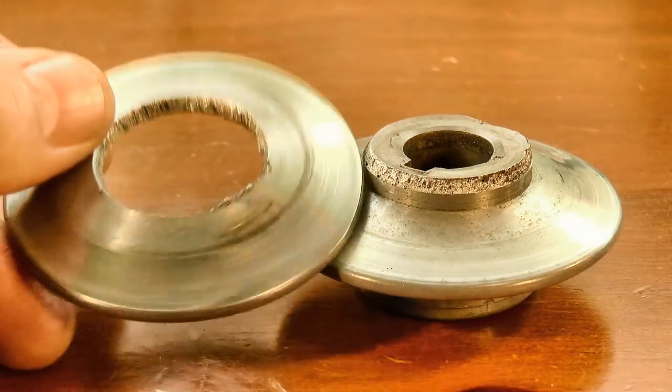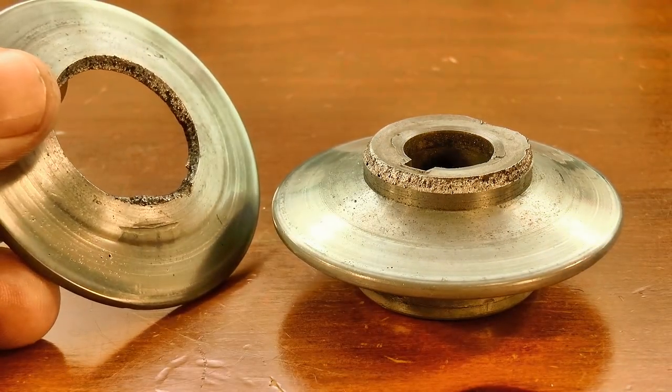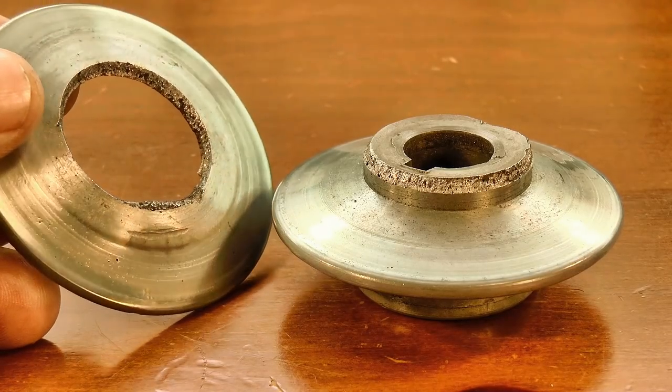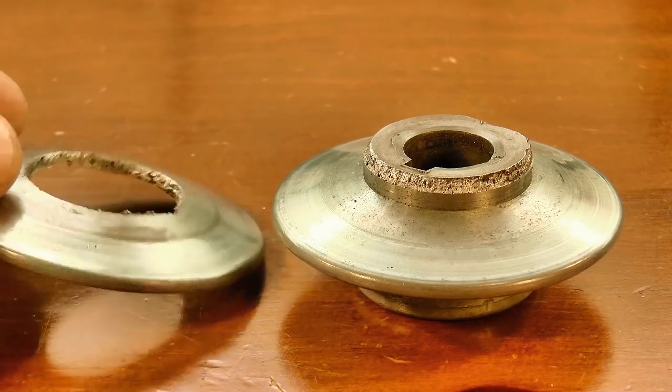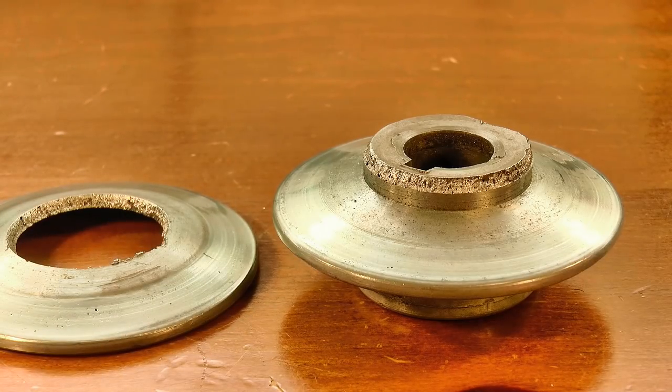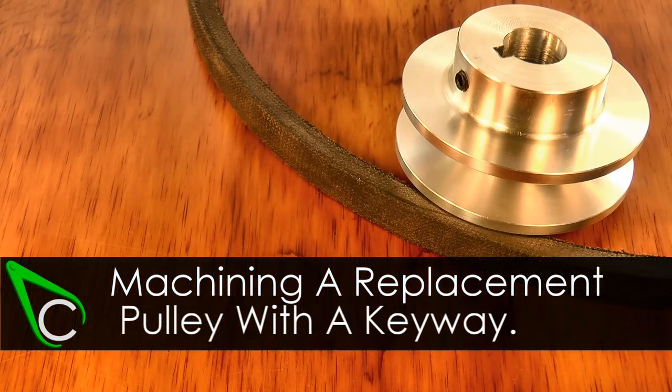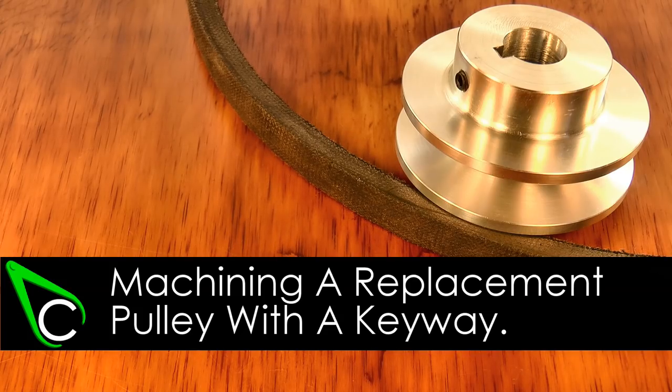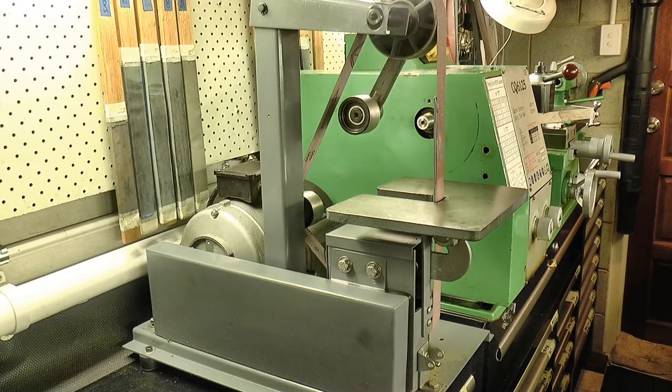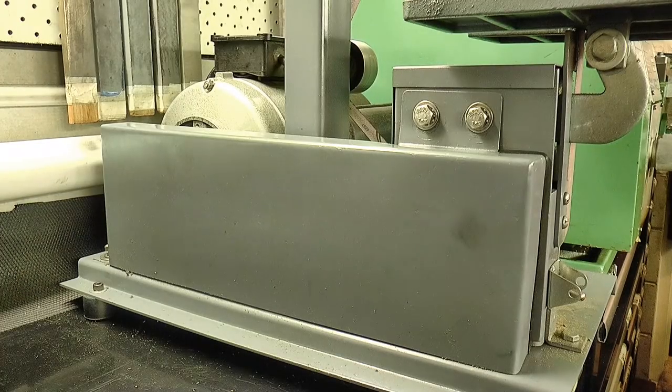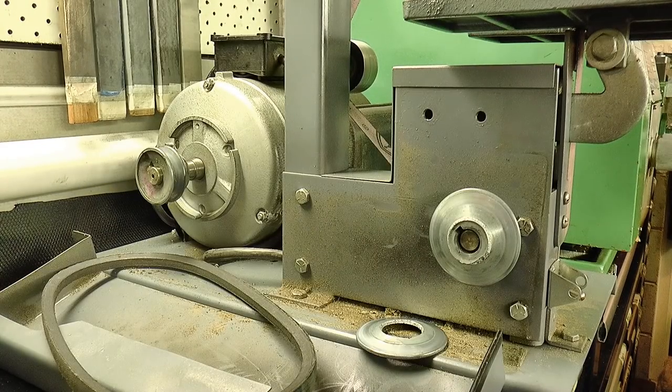G'day, Chris here, and welcome back to Clickspring. My 1 inch belt sander has a broken drive pulley, so in this video, I make a replacement pulley to get it running again. Of course a replacement pulley can be purchased quite cheaply, but I couldn't resist the excuse for another video, so here we go.